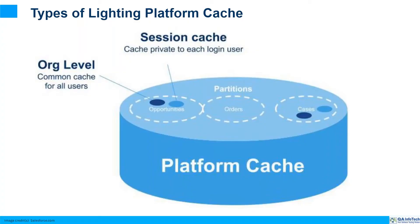There are two types of Lightning platform cache: org cache and session cache. Both have two classes — cache.OrgPartition and cache.Org for org cache, and cache.SessionPartition and cache.Session for session cache. Org cache is a common cache in an org accessible by all users, while session cache is privately used by each logged-in user. The time to expire cache data in org cache is 48 hours, while in session cache it is up to 8 hours. However, we can define the time-to-live for cache through Apex as well.